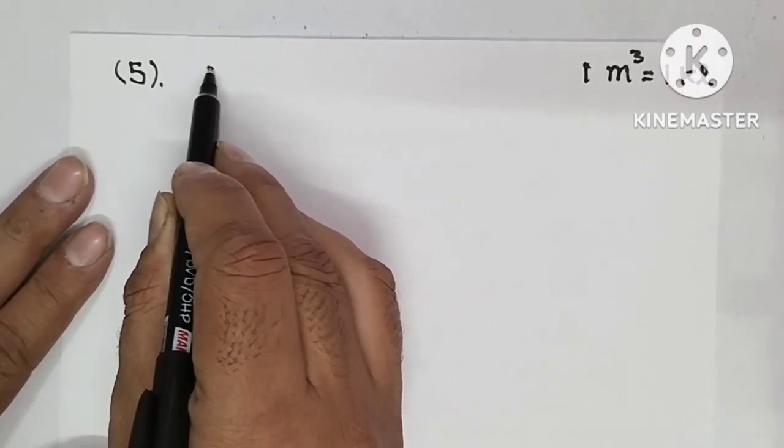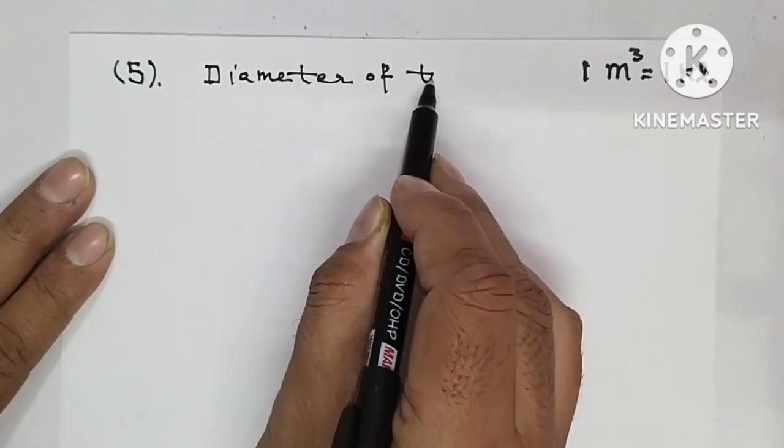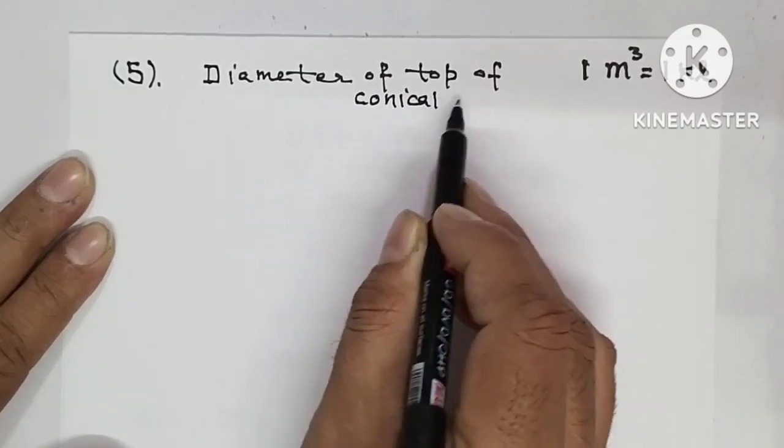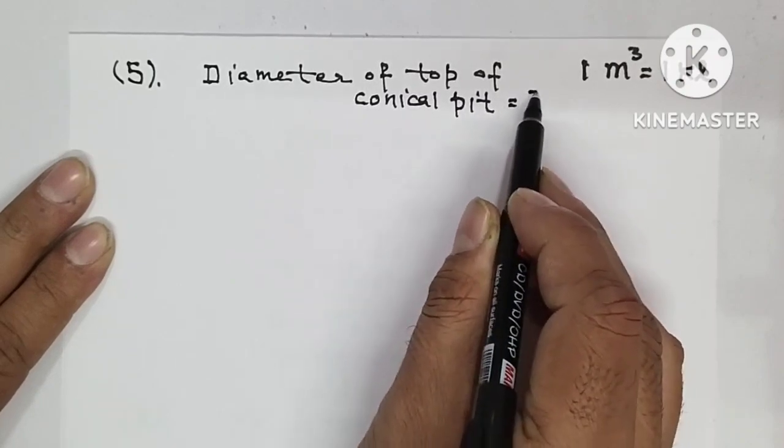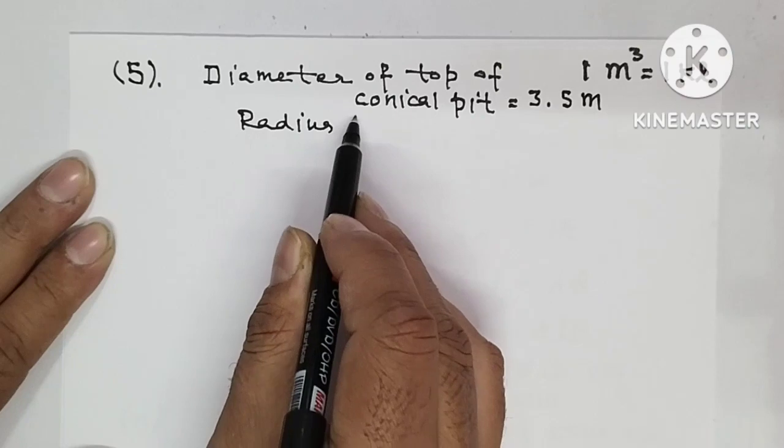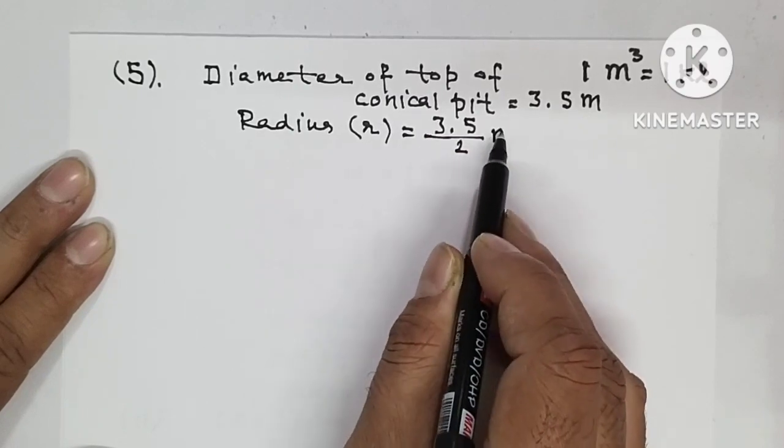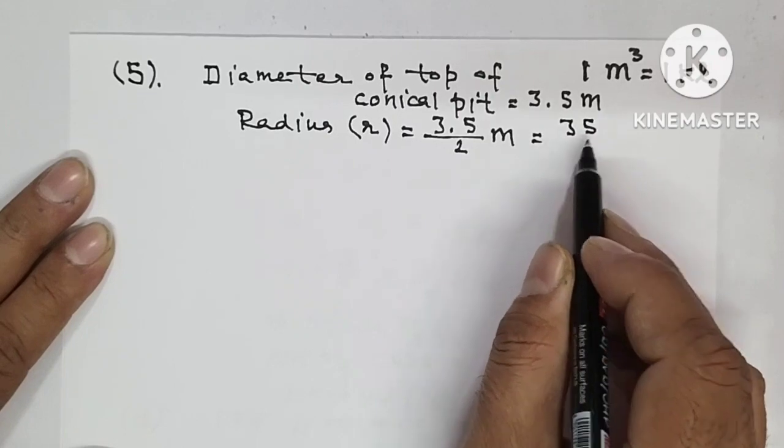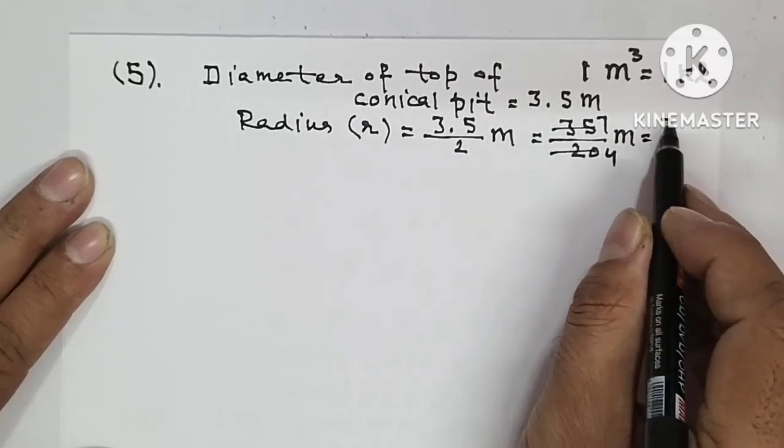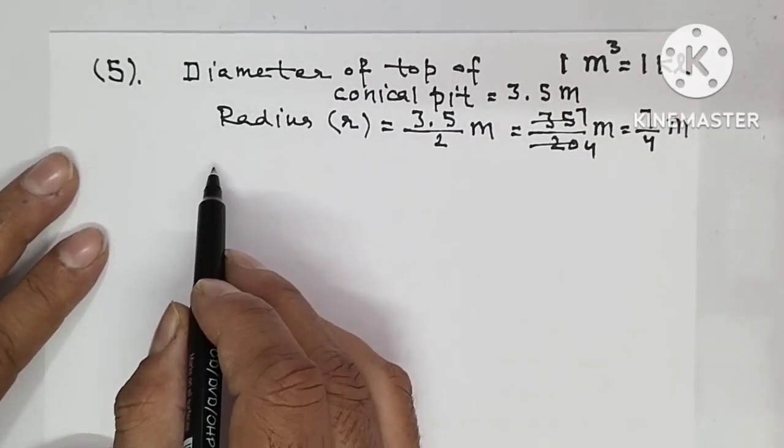We will start the solution. You are given diameter of top of conical pit, which is equal to 3.5 meters. So radius R equals 3.5 divided by 2 meters, which is 35 upon 20 meters. This equals 7 upon 4 meters after necessary cancellation.